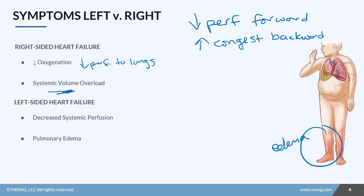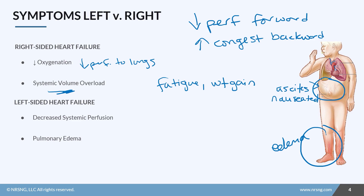Going backwards in right-sided heart failure, we see congestion into the systemic circulation — way overloaded. A big sign is peripheral edema. The patient will be tired and fatigued, may gain weight, and some fluid can collect in the gut, causing ascites and nausea. Blood backing up into the neck causes distension of the jugular vein — JVD — it looks like a rope in the neck. These signs of excess systemic volume point to right-sided heart failure.